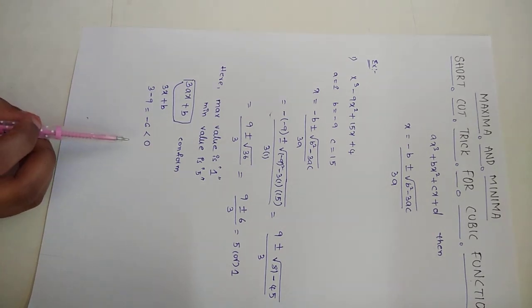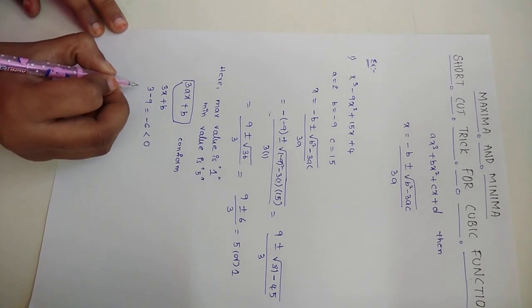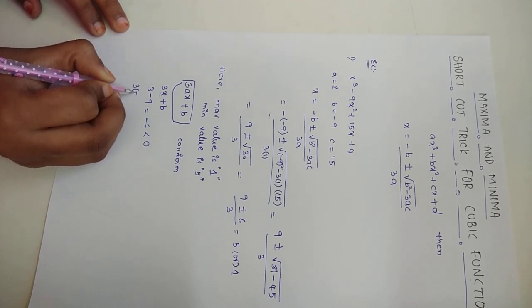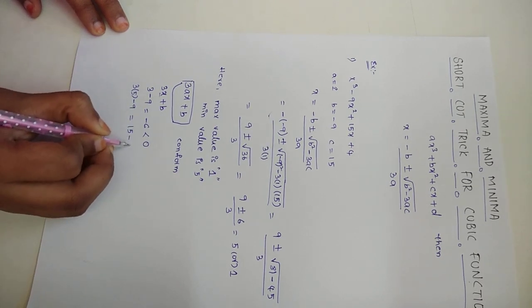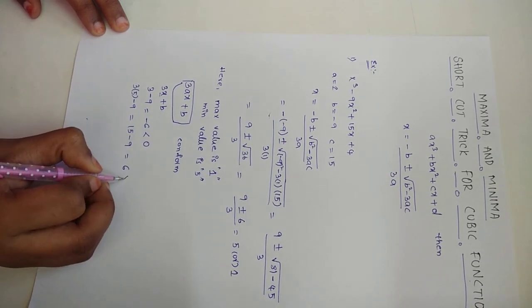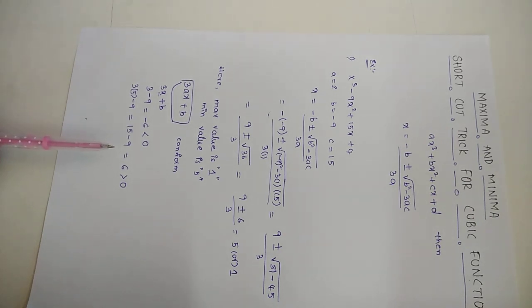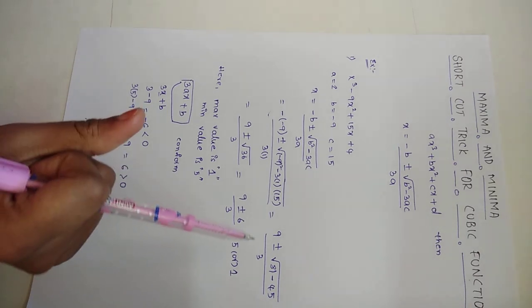Now substituting x = 5: 3(5) + (−9) = 15 − 9 = 6, which is greater than 0. Since the second derivative is positive, it confirms that x = 5 is a minimum value. So in every question, the lower x value will always give the maximum, and the higher x value will always give the minimum. Wasn't that very quick?